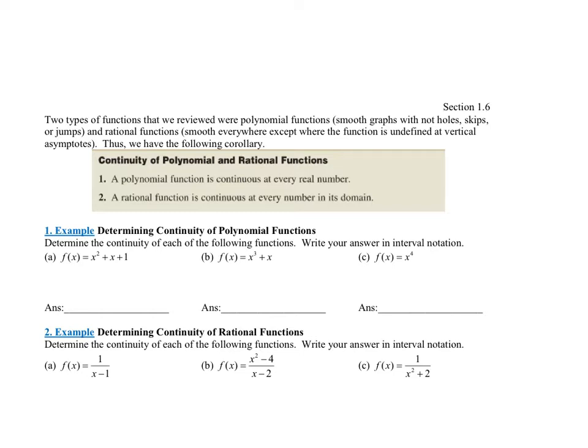Every polynomial function, if it's odd, either starts high and ends low or starts low and ends high. If it's even, it starts high and ends high, or starts low and ends low. But you could draw the entire picture of a polynomial function without lifting your pencil once, so that means it's continuous everywhere. All polynomial functions are continuous everywhere.